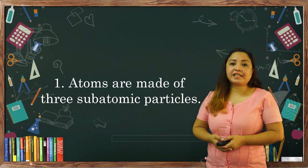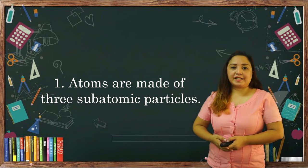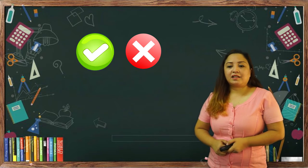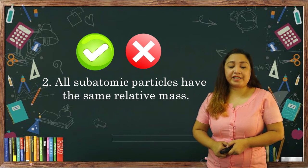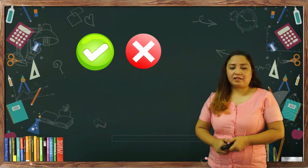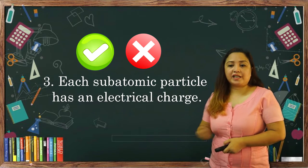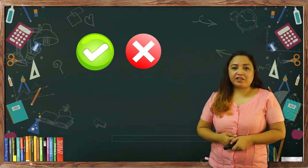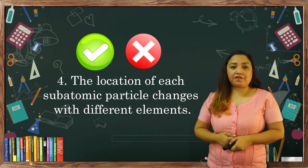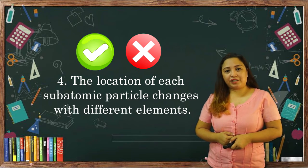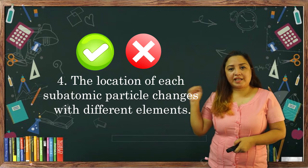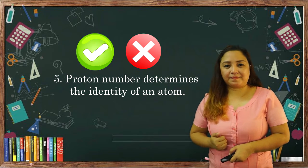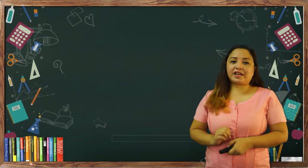Statement one: atoms are made of three subatomic particles. Is it a fact or bluff? Statement two: all subatomic particles have the same relative mass. Statement three: each subatomic particle has an electrical charge. Statement four: the location of each subatomic particle changes with different elements. Statement five: proton number determines the identity of an atom. I will give you two minutes to write down your answers.